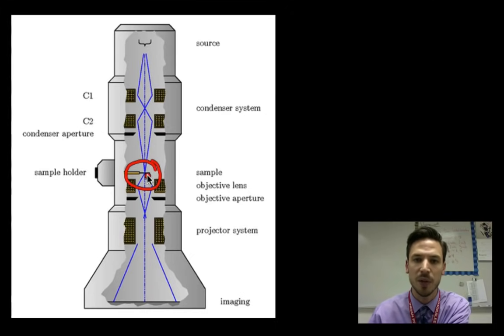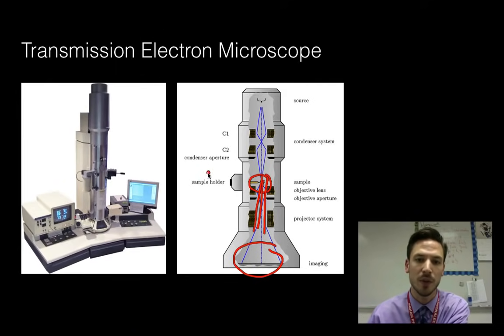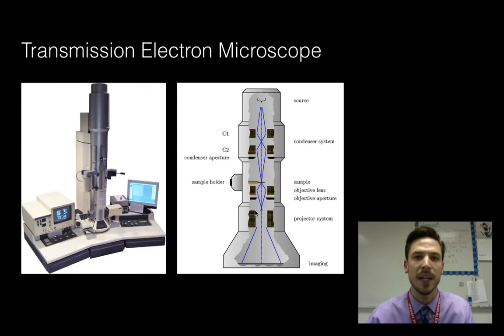Because what we want these electrons to do this time is not bounce off of them, but we want them actually to pass through the other side. Now when those electrons pass through, they're going to be picked up again by a detector, sent over to that computer, and we're going to get that black and white image. So we're not scanning the surface, we're actually letting those electrons pass through. And again, we get these high resolution, high magnified images.